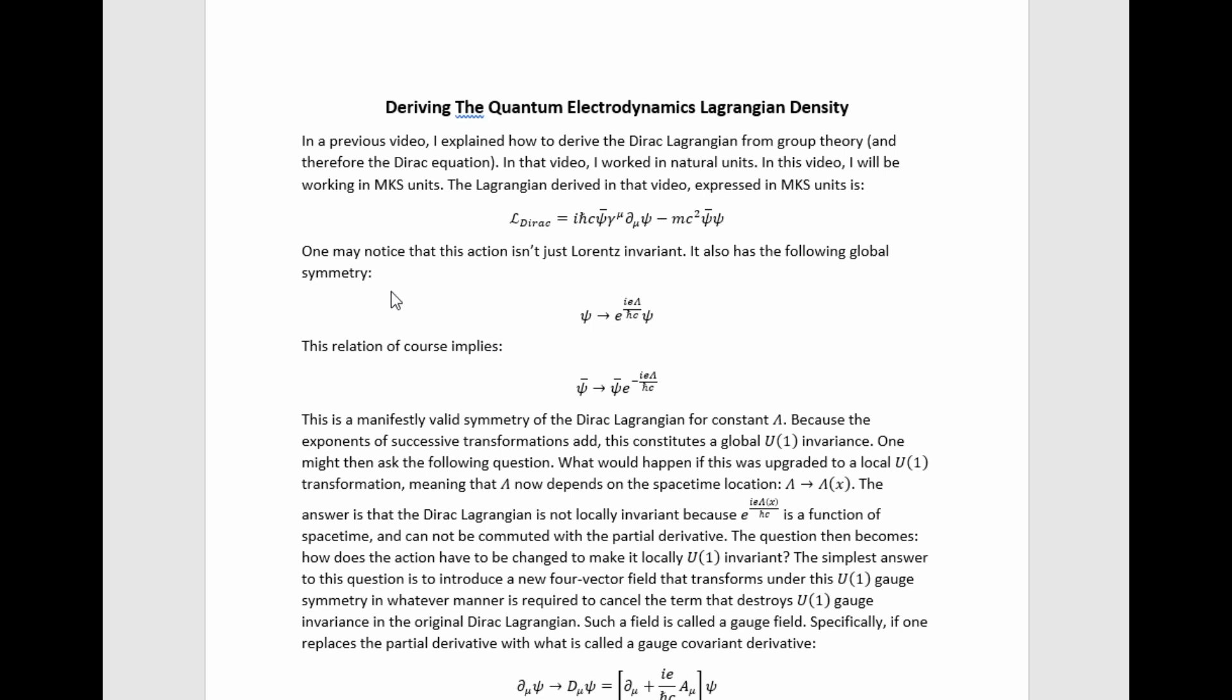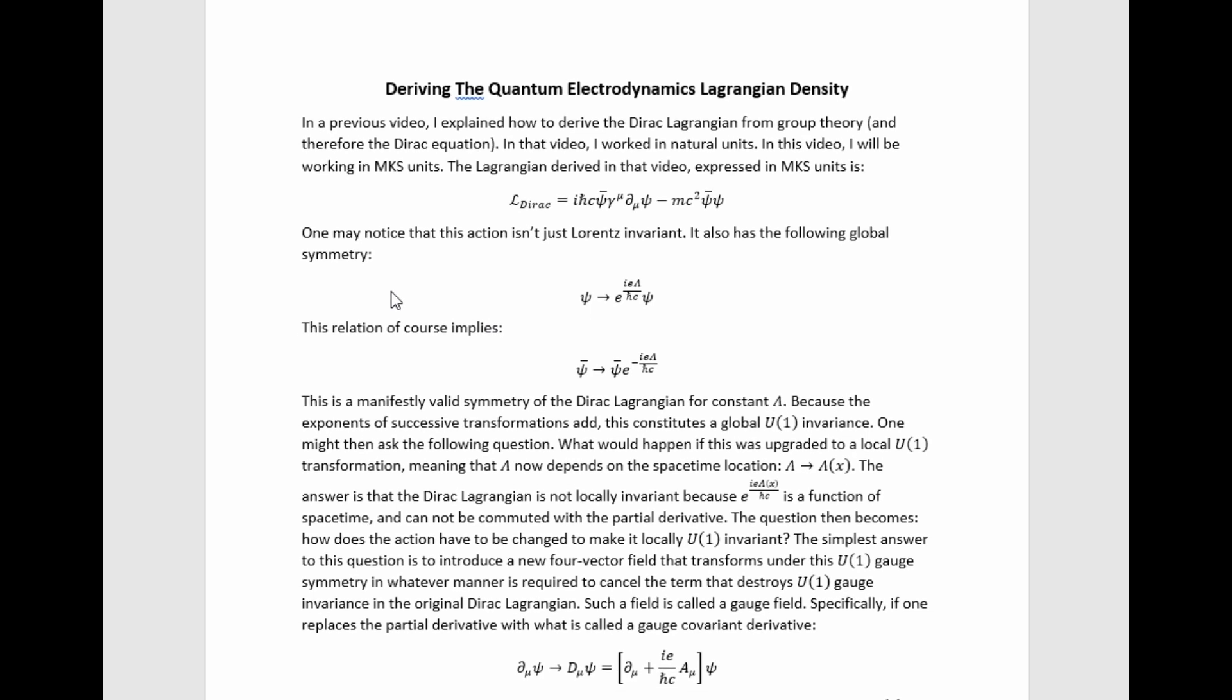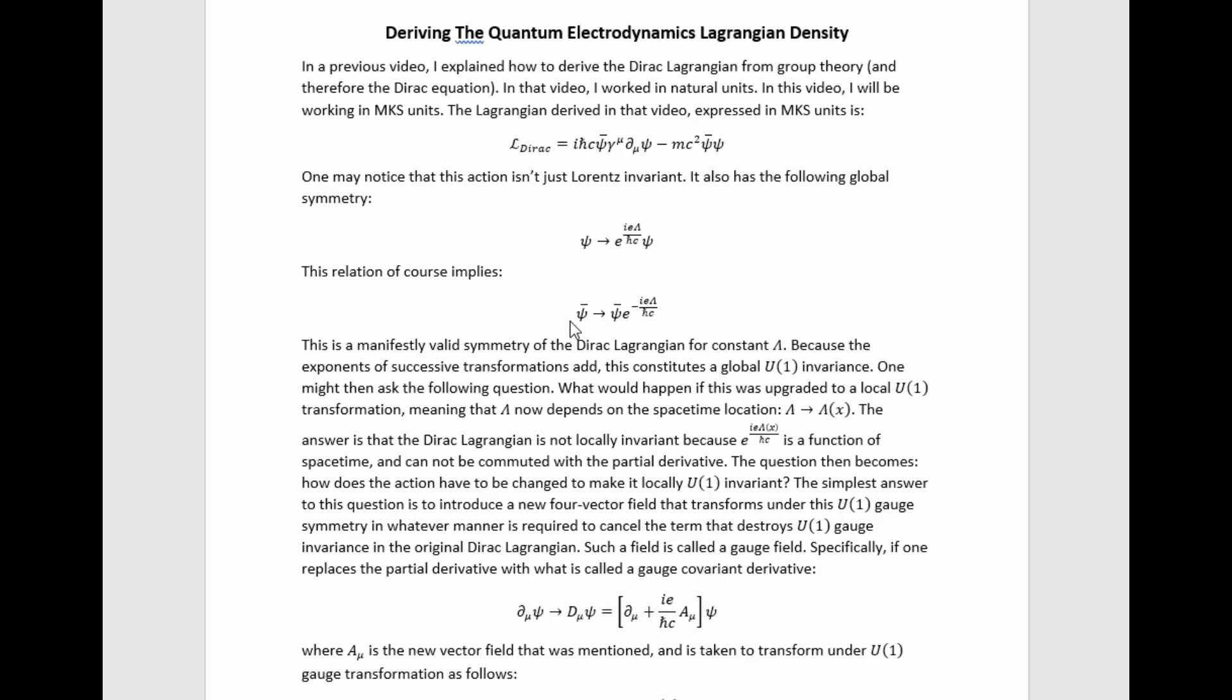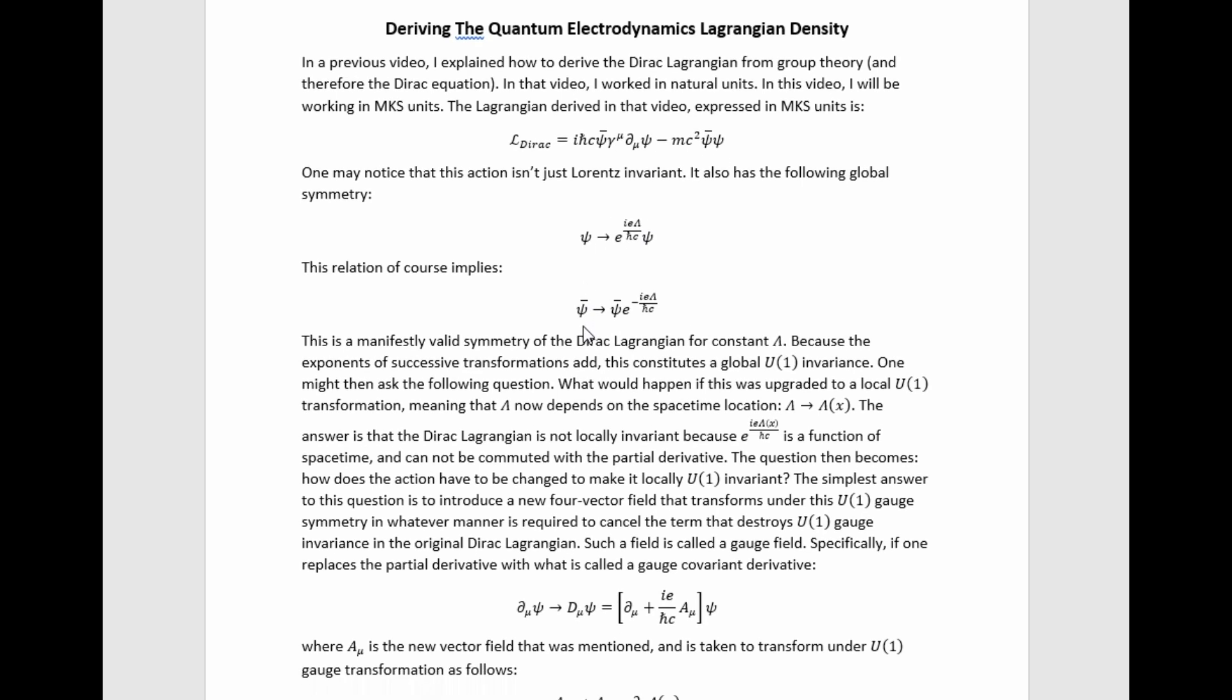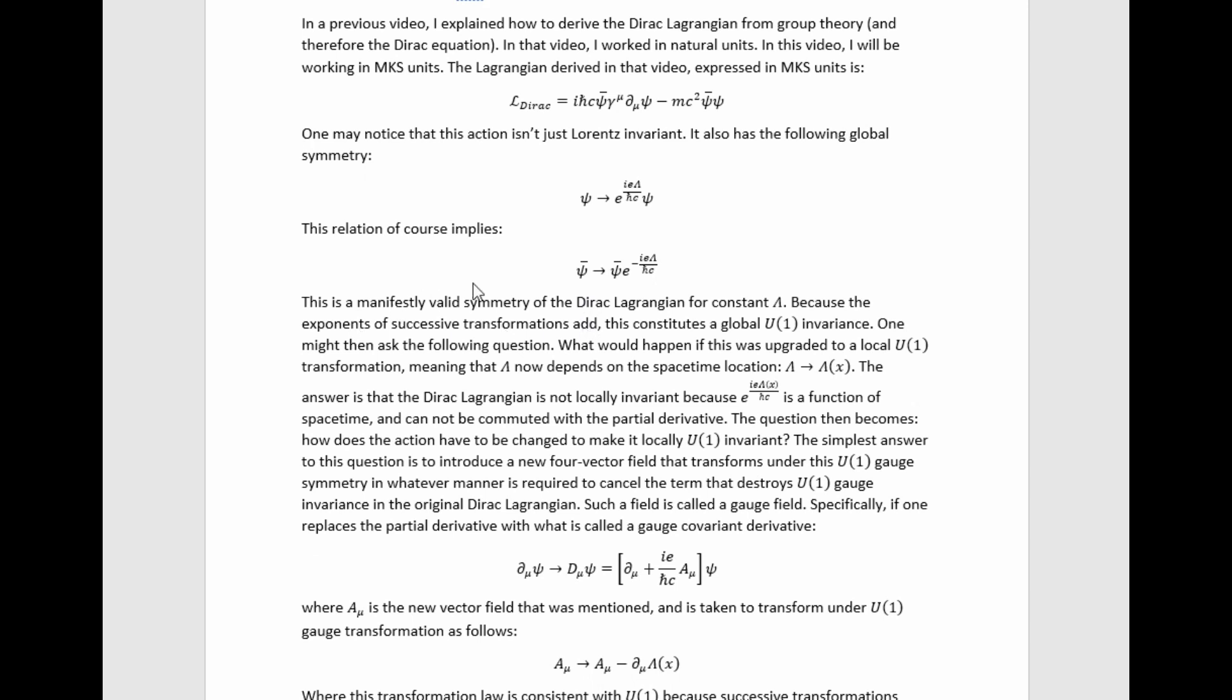One may notice that this action isn't just Lorentz invariant. It also has a global U1 symmetry. Specifically, if we transform psi to this exponential times psi, which of course just implies this relation for psi bar, and plug it in up here, we see that for constant lambda, they just come across and cancel each other in both terms. So it's invariant into that transformation for arbitrary parameter value there, where lambda is the parameter.